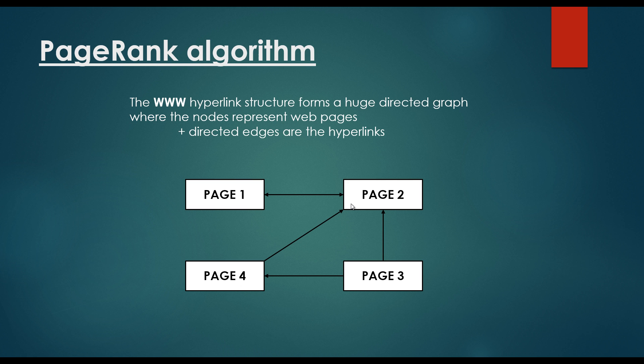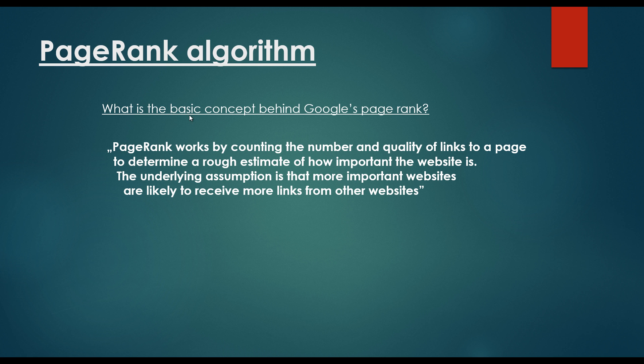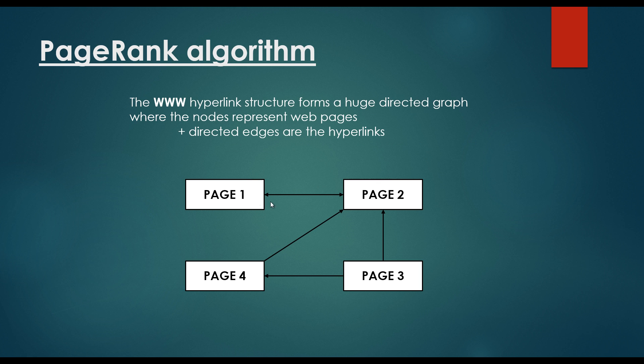And we may pose the question: how do we define an important website, an important page? So what's the basic concept behind Google's PageRank? PageRank works by counting the number and the quality of links to a page to determine a rough estimate of how important the website is.